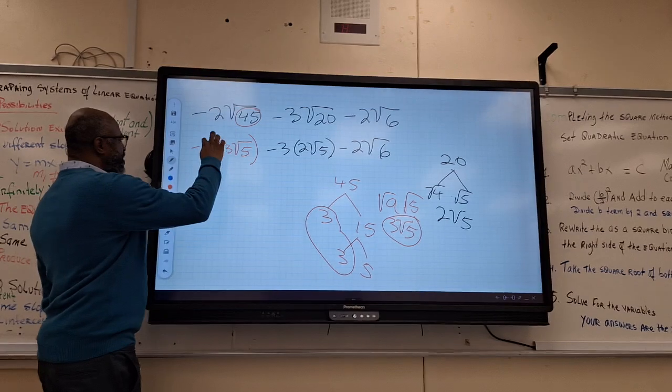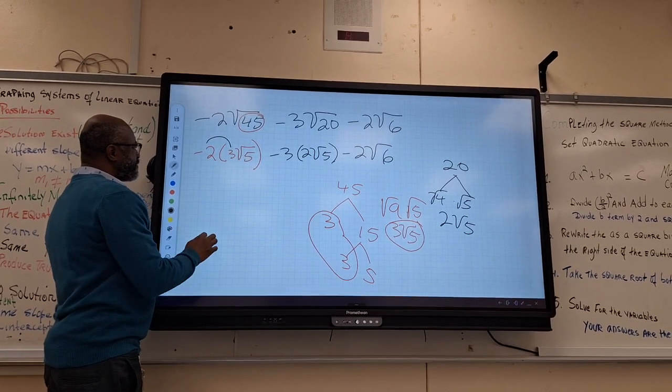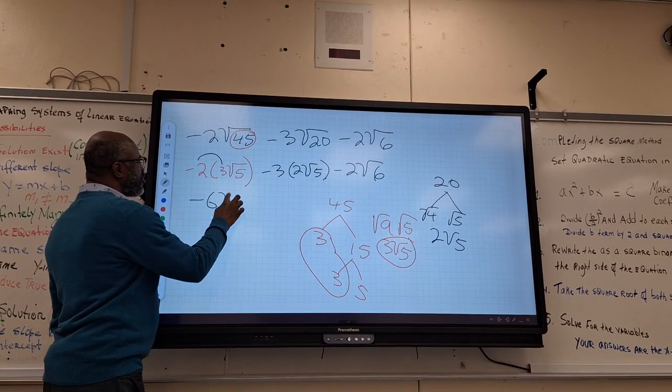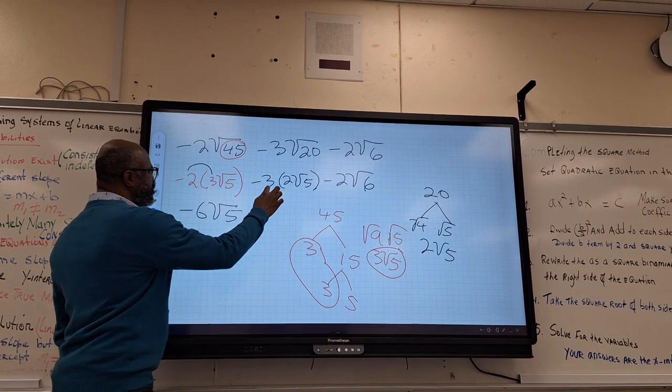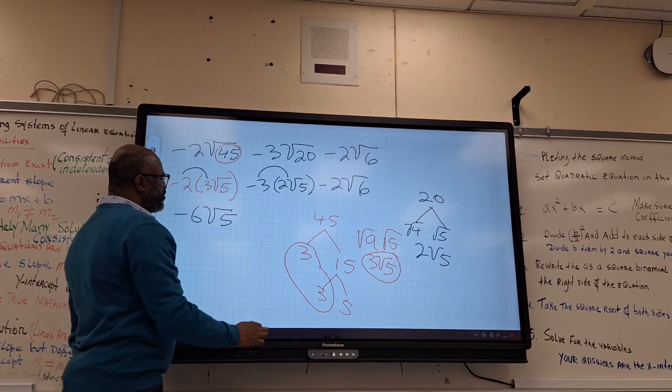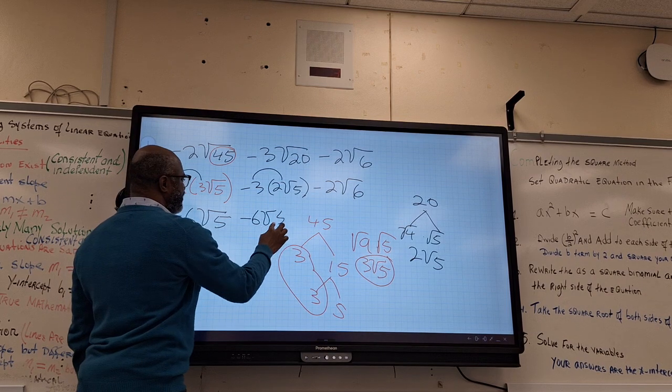Do we have any like terms? So we distribute here. This will give you what? Negative 6 root 5. And we do the same thing here. This will give you negative 6 root 5.